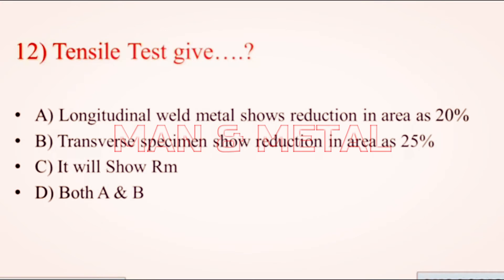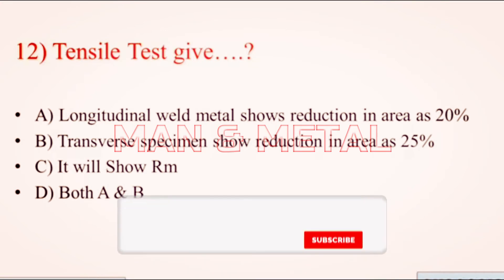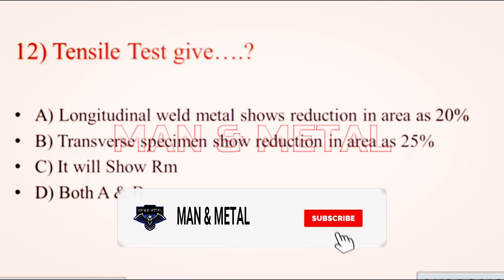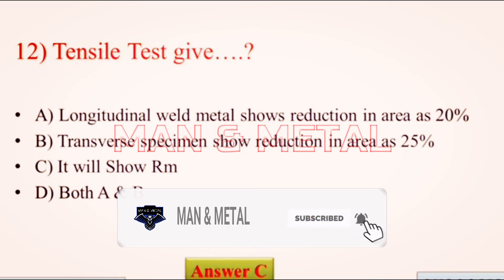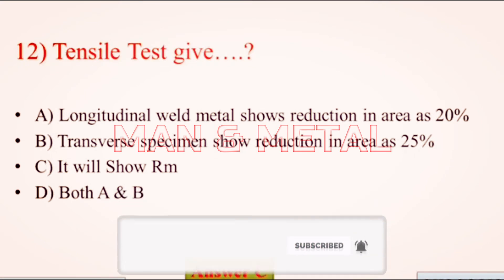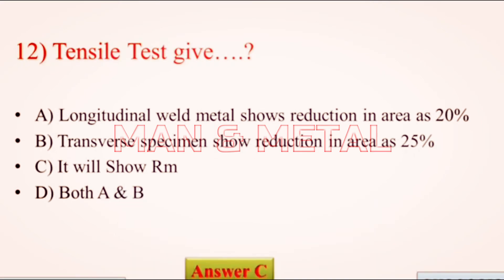Question 12: A tensile test gives: a) longitudinal weld metal shows reduction in area of 20%; b) transverse specimen shows reduction in area of 25%; c) it will show Rm; d) both a and b.